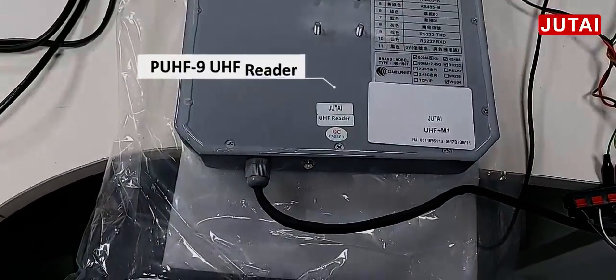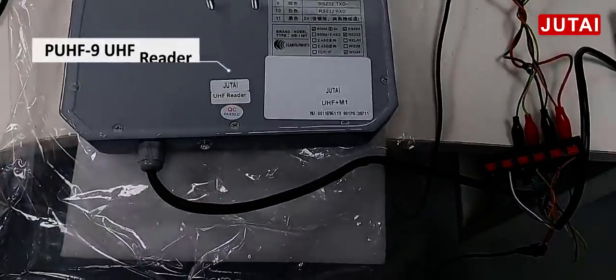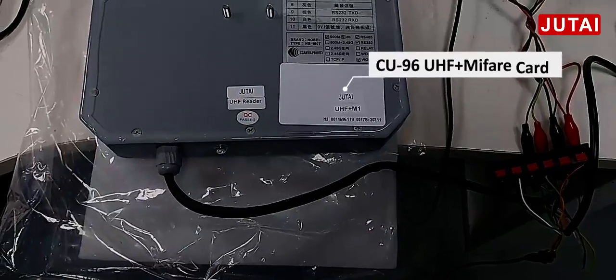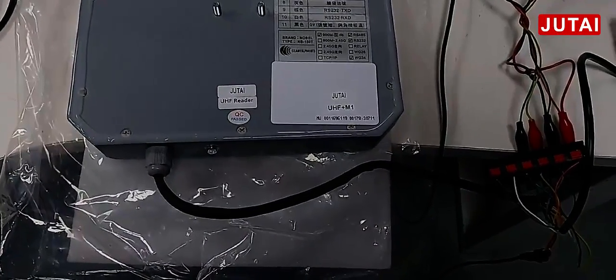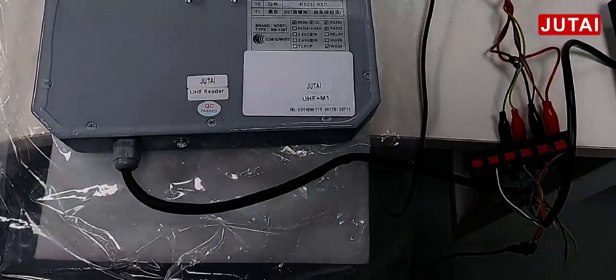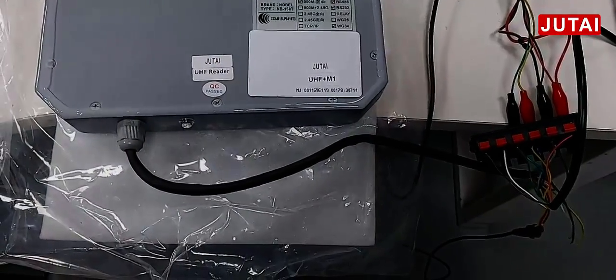This is Jutai UHF Reader. This is Jutai UHF Mixing Mayfair card. It is a dual frequency card. We check the card ID 30711.